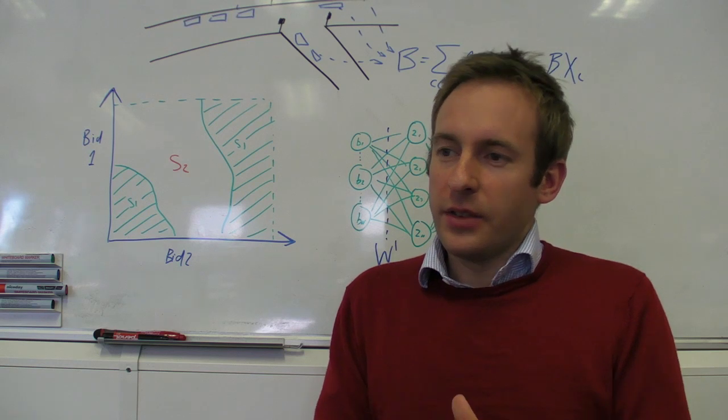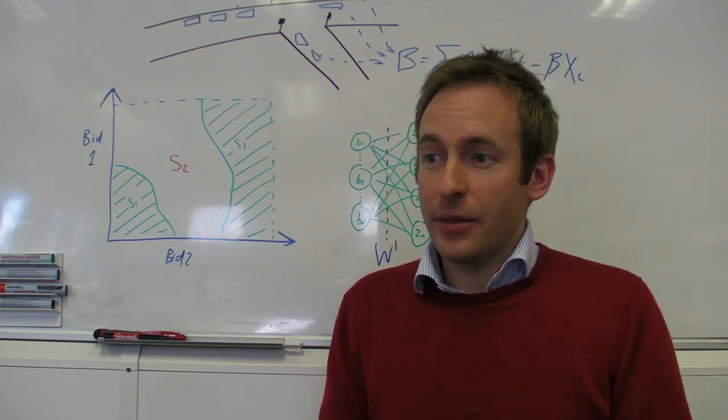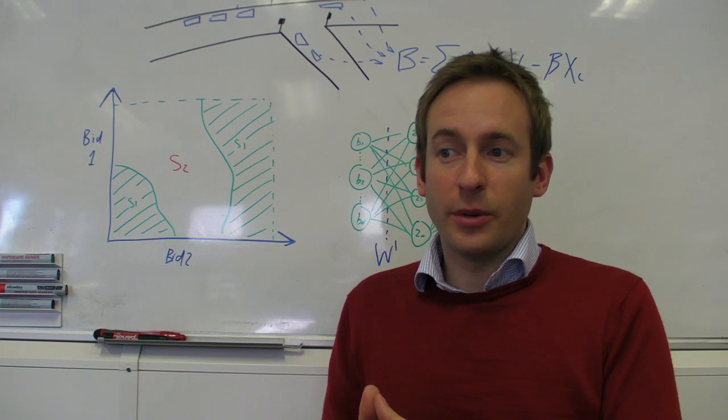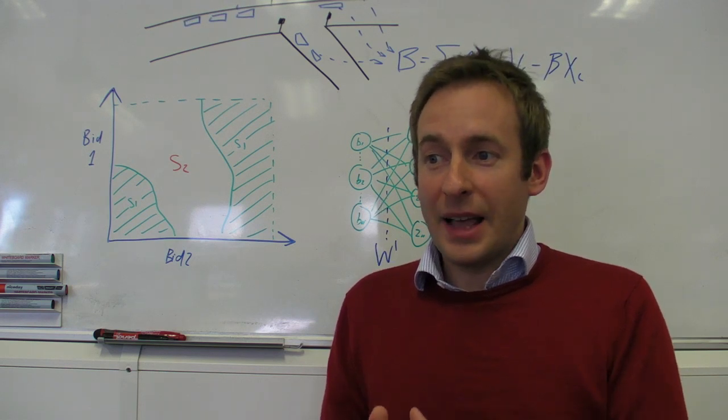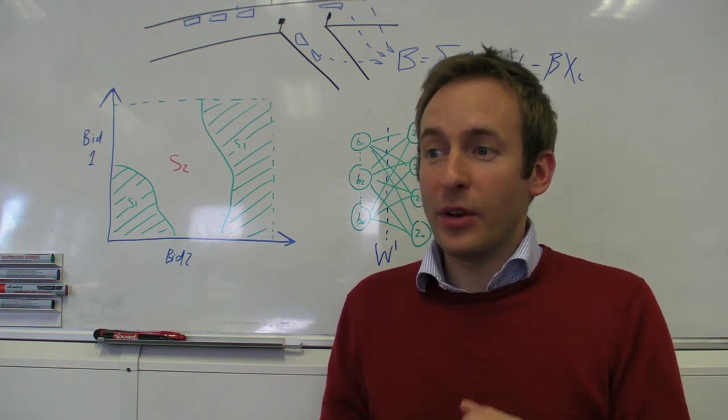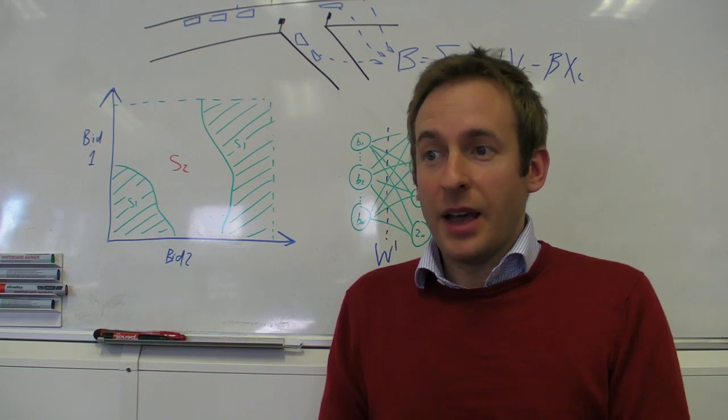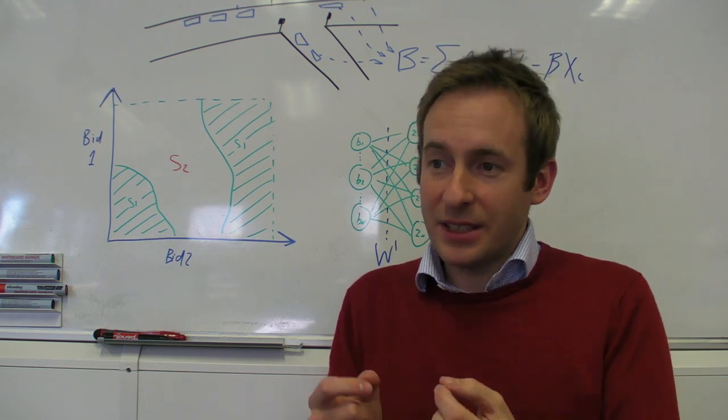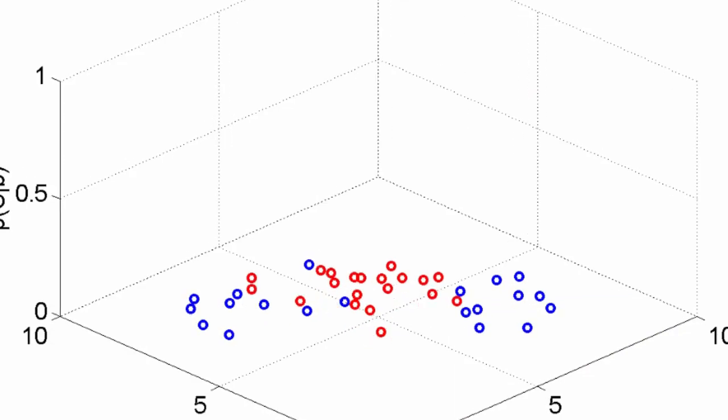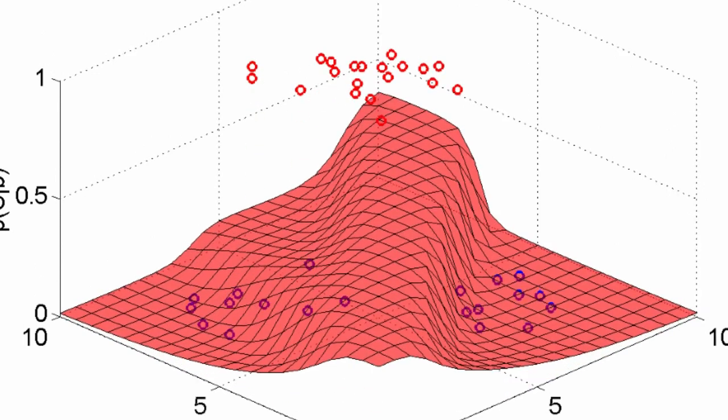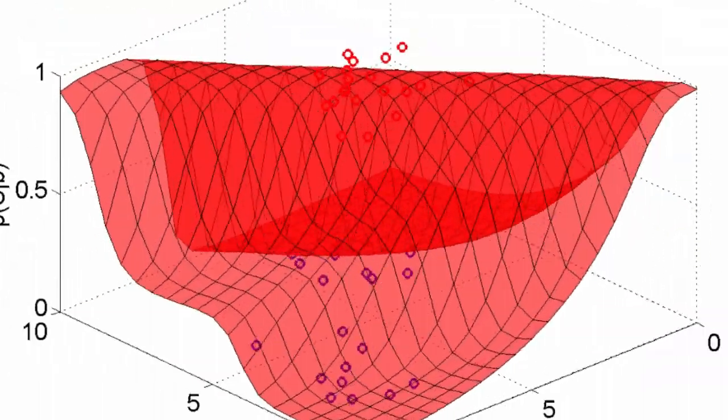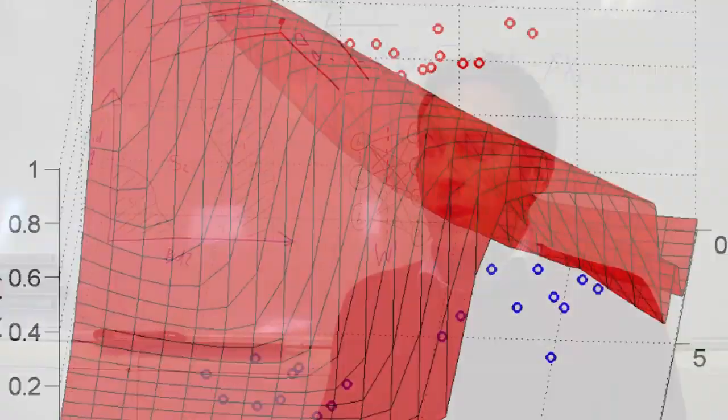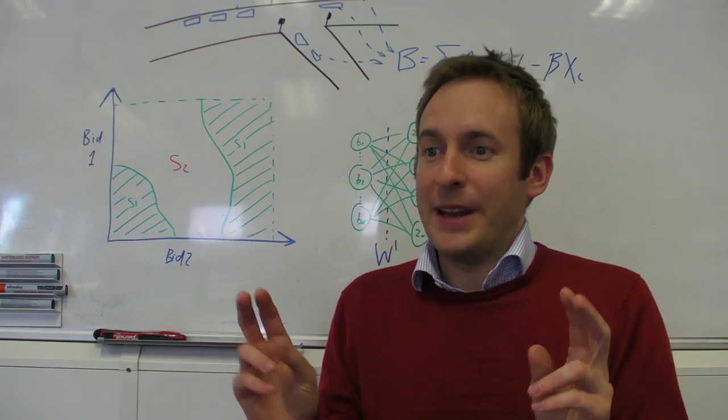So under the system that we've developed, we get a human to sit down and play the junction control computer game. And while they play, the computer program monitors what they're doing and it tries to pick out statistical patterns between the situation on the road and the decisions that the human is making about who to give the green light to. And in that way, the computer program becomes trained.